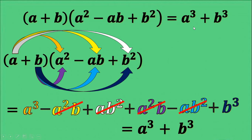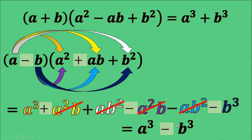What remains are a cubed plus b cubed, which matches the result from the shortcut above. If the operation on the binomial is minus, then we should have a plus sign in the trinomial so that the shortcut will work. Applying the distributive property, we can still cancel all the middle terms, leaving a cubed and negative b cubed. So if the operation on the binomial is minus, then the operation on the answer must also be minus.